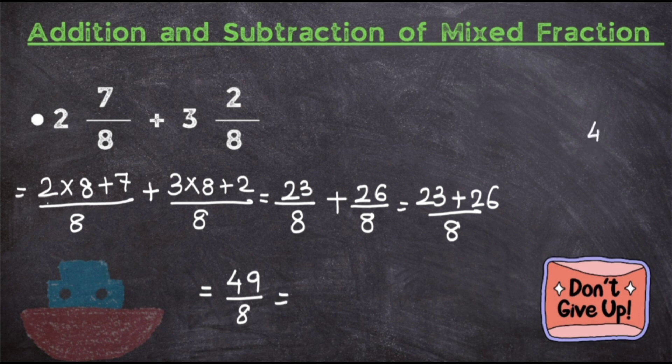For that, simply divide 49 divided by 8. It will be 6 with remainder, so 8 times 6 is 48, which leaves 1. It will be 6 1/8.